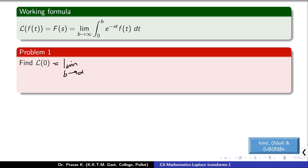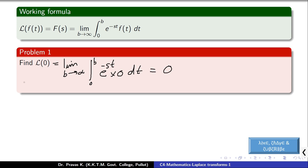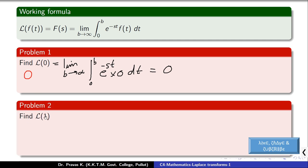We can now do our first problem. Here f(t) is equal to 0, so replacing f(t) with 0 in the formula, everything inside the integral becomes 0, and therefore L{0} is equal to 0.